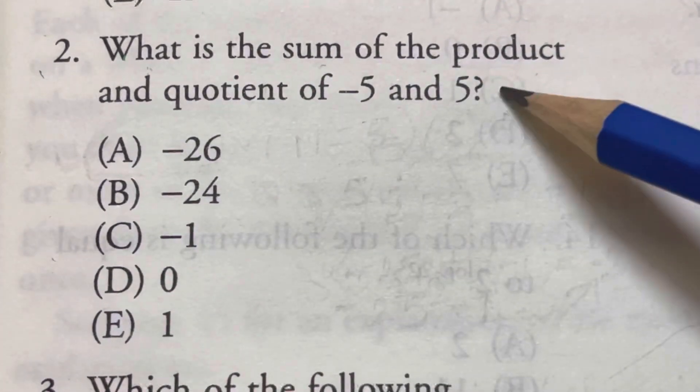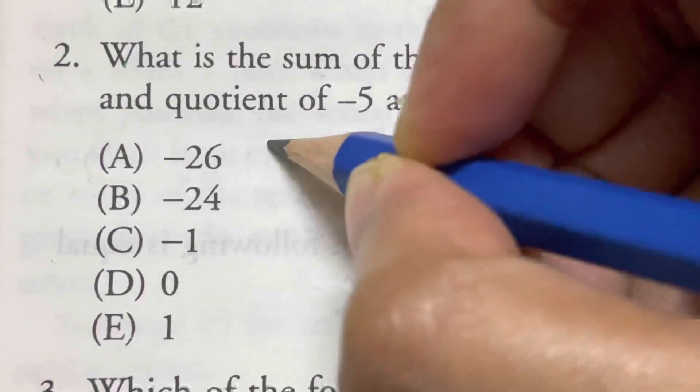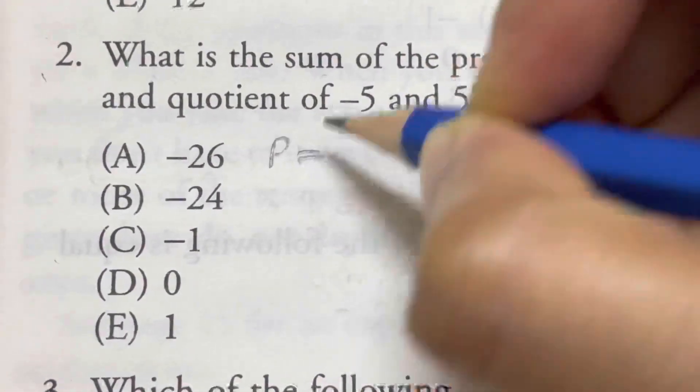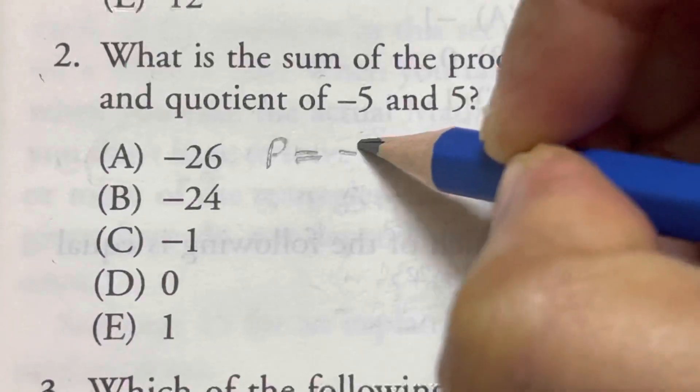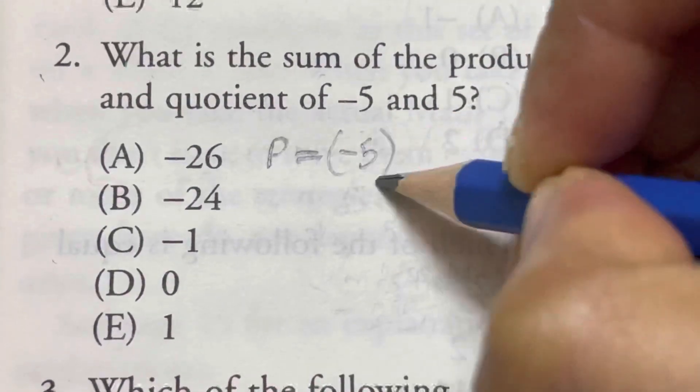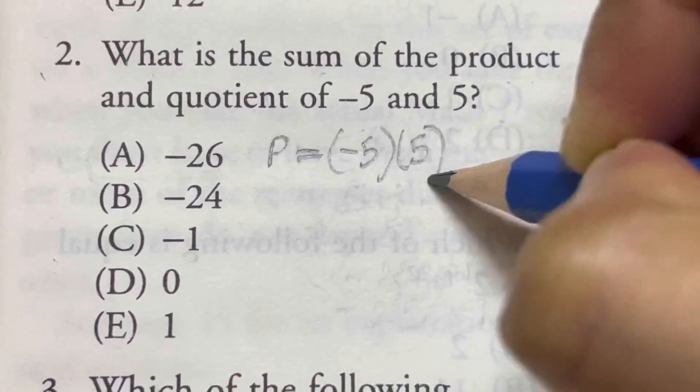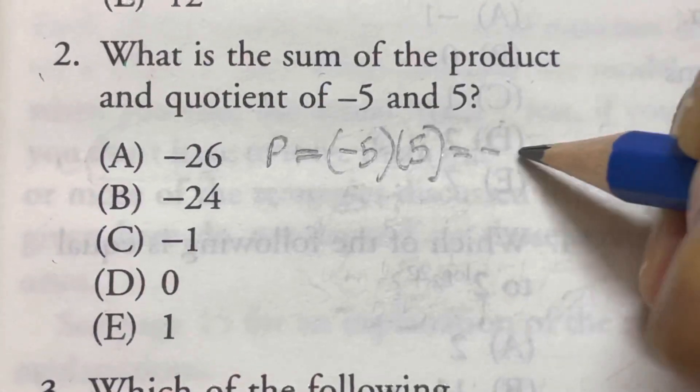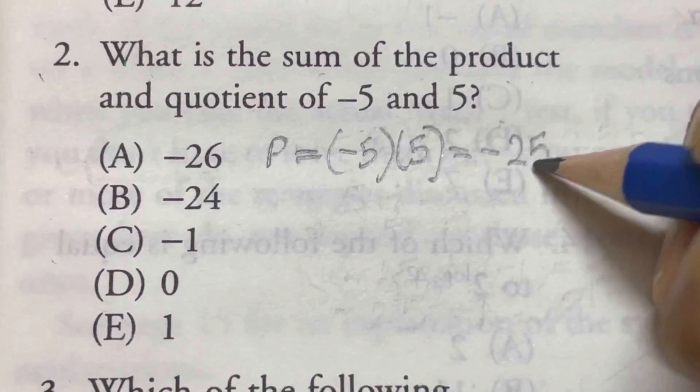Product means multiplication and quotient means division. So we'll just write down product of minus 5 and 5. So minus 5 and 5 is just minus 25. This is your product.